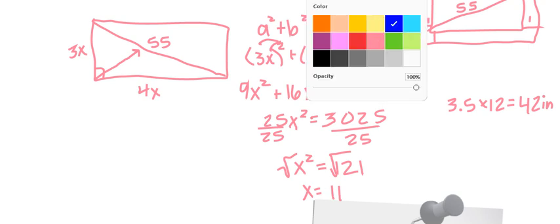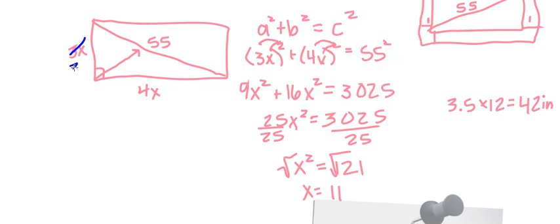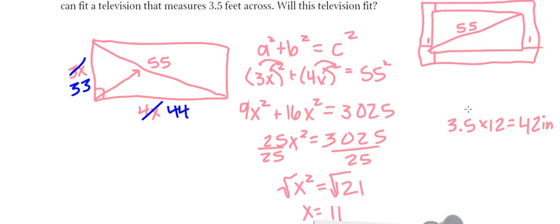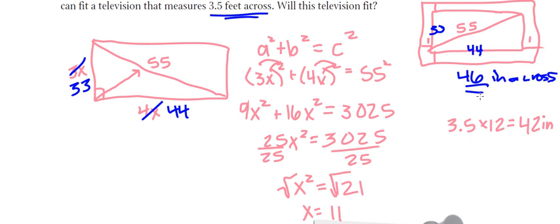So when I think about my side lengths, 3x = 33 inches and 4x = 44 inches. Then adding the one-inch plastic frame on each side, it would be 44 + 1 + 1 = 46 inches across. We're trying to fit it in a three-and-a-half-foot space, which is only 42 inches, and this TV would be 46 inches. So it would not fit in the designated space. If you got that question, you truly understand the Pythagorean theorem and your exponent rules.